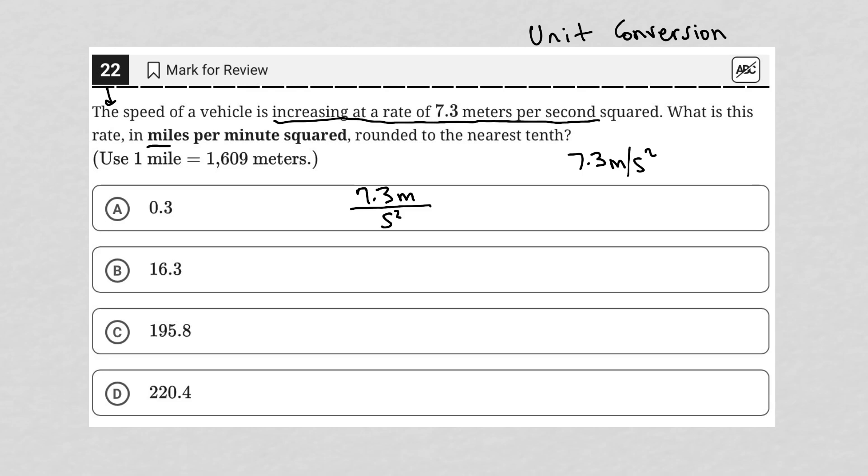The question tells me that I want miles per minute squared. So let's start off with how to convert from meters to miles. The question does tell us that. I want meters here and miles there so that my unit of meters can cross cancel out. That's how I know where to place that.